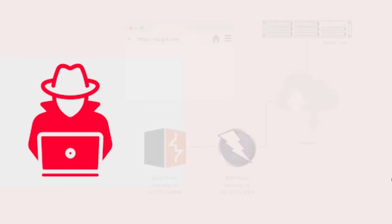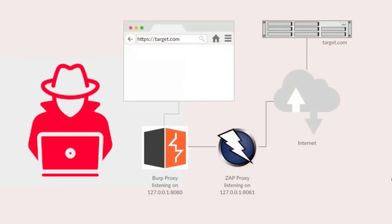You have a browser, you have Burp Suite, and you have a router. If you send all the requests in the browser, you can see them in Burp Suite — we can see what the request is. If you don't see it, you can edit the request and customize it, and you can see the request again.